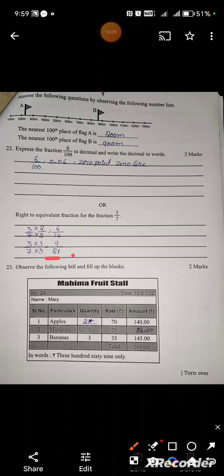Observe the following bill and fill up the blanks. This is a 2 marks question for Mahima fruit stall bill. Apple: 70 rupees rate, total amount 140. How many kgs? 140 divided by 70 is 2 kgs. Mango: 3 kg, 28 rupees per kg. Multiply to get 84.